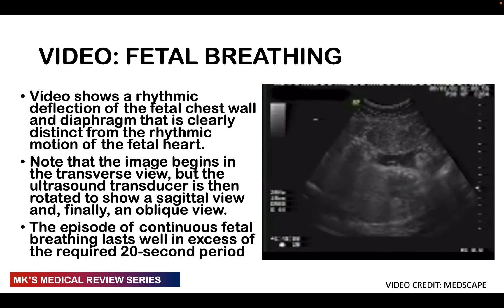For fetal tone, a score of 2 is given if there is one or more episode of active extension with return to flexion of the fetal limbs or trunk — for example, opening and closing the hand, which is considered normal tone. A score of 1 is given if there is slow extension with return to only partial flexion, movement of the limb in full extension, absent movement whatsoever, or a partially open fetal hand.